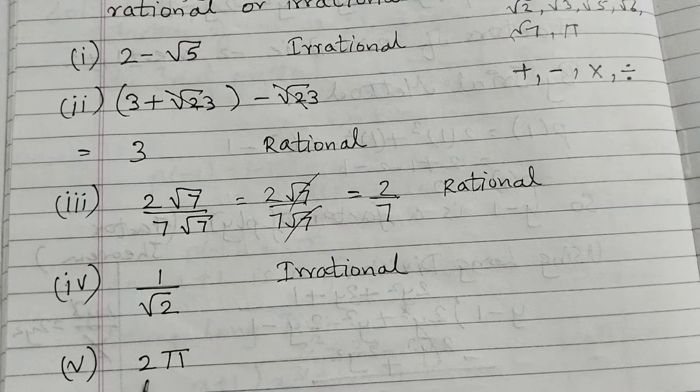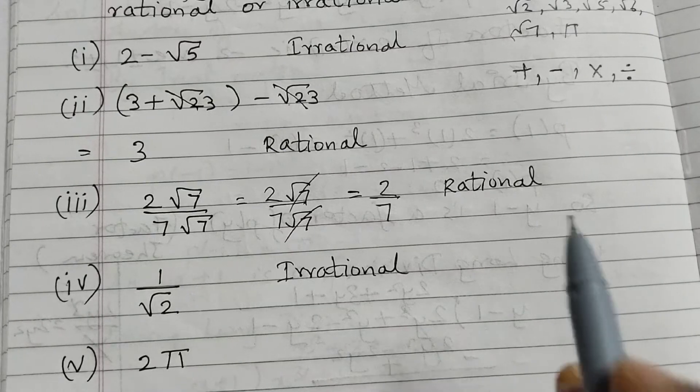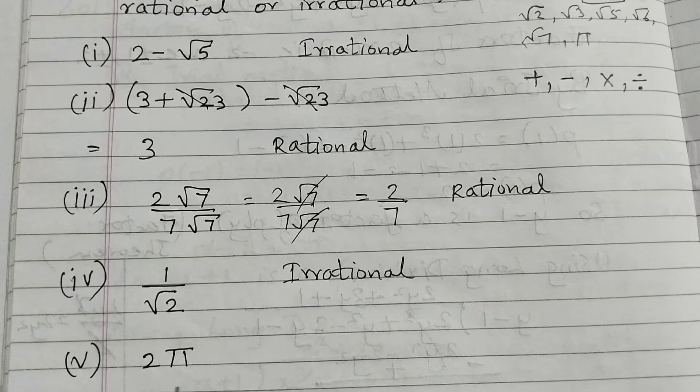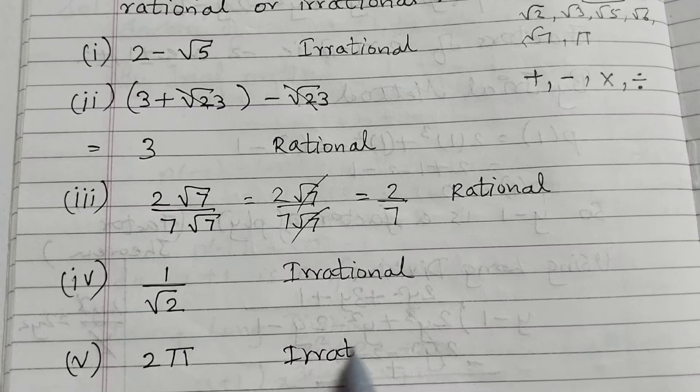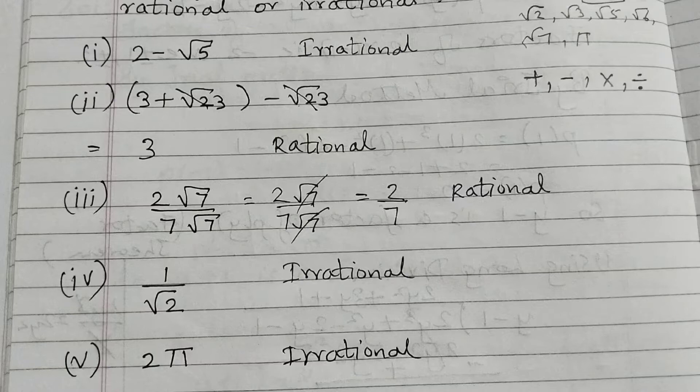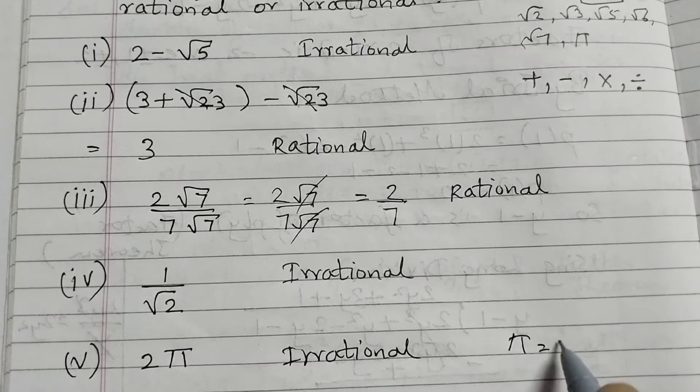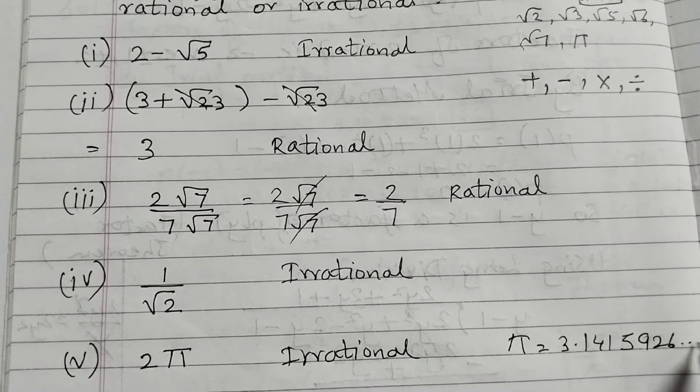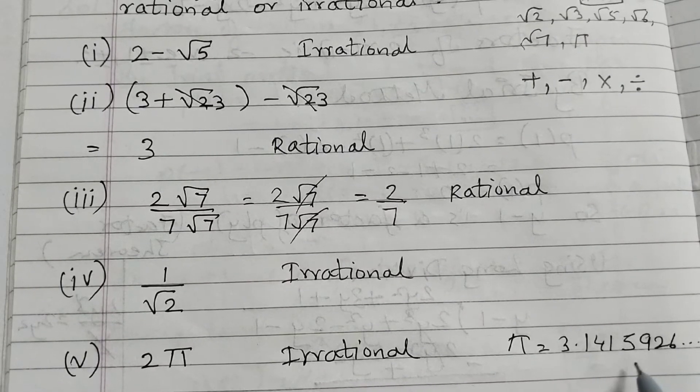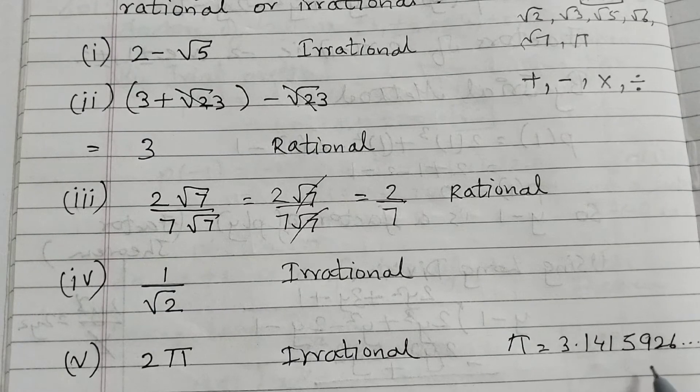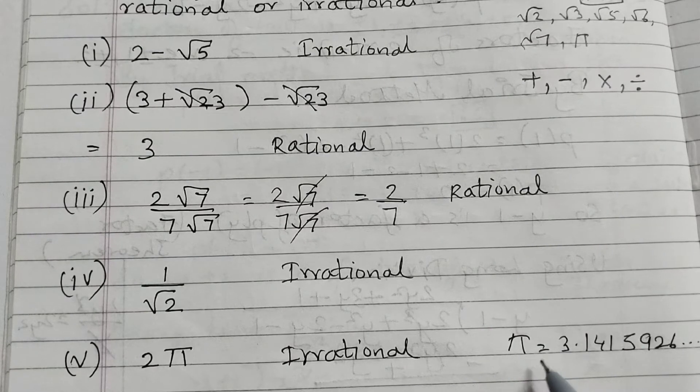2 pi. That means 2 into pi. Pi is an irrational number. So when we multiply by irrational number, the whole thing becomes irrational. Well, the value of pi is 3.1415926 something, something, something. So this is like non-terminating, non-recurring, non-repeating. It will go on forever, never stop, and it will not repeat itself. So that's why pi is an irrational number.